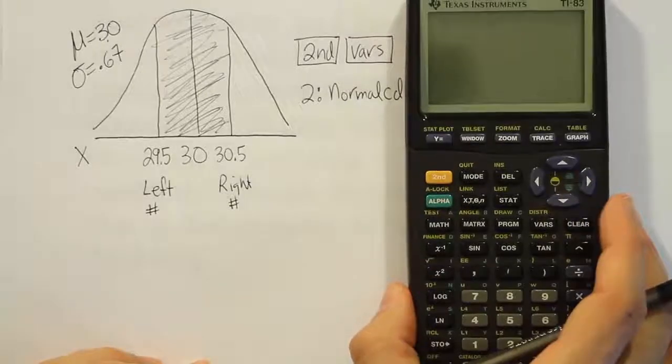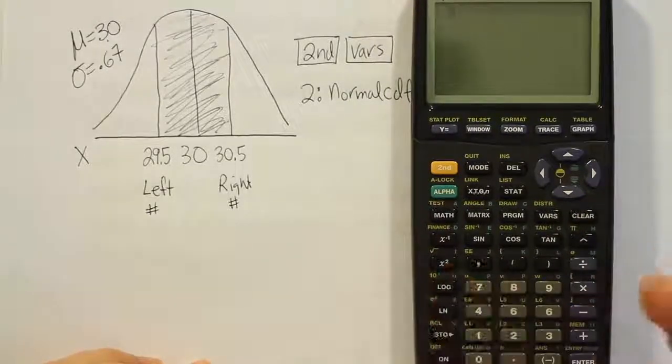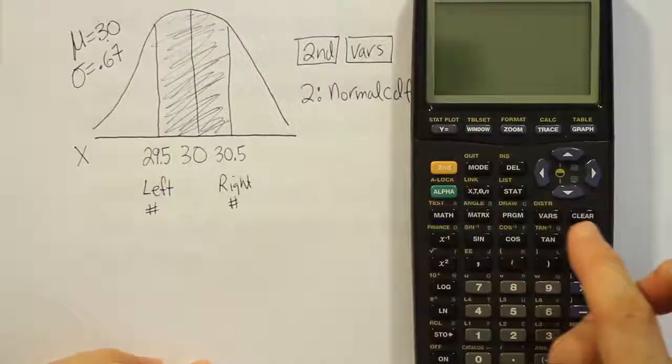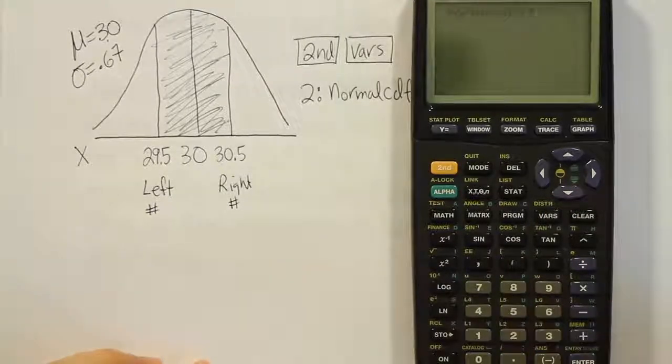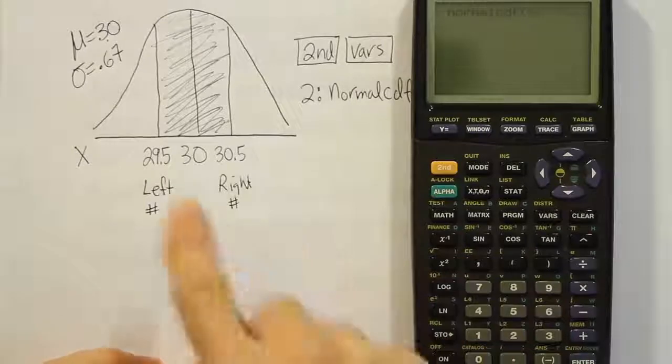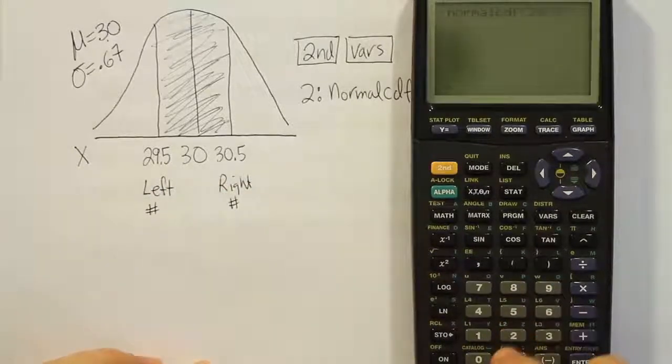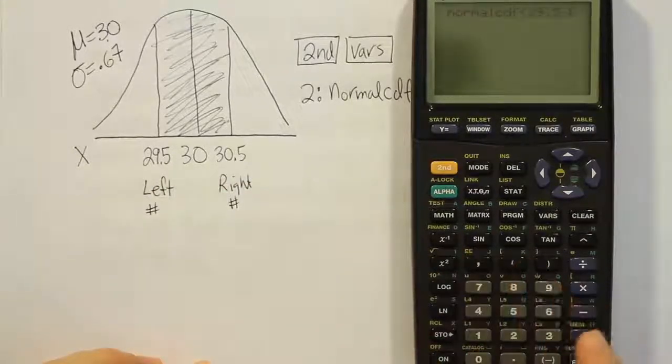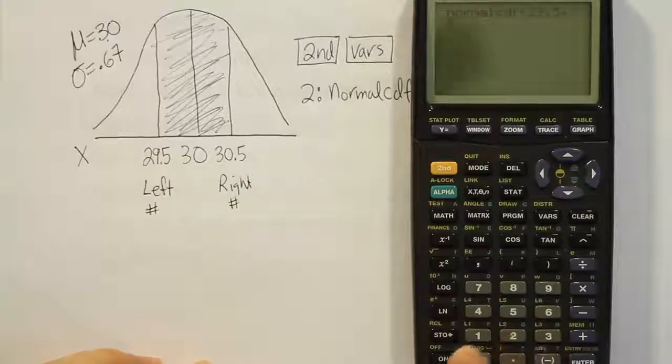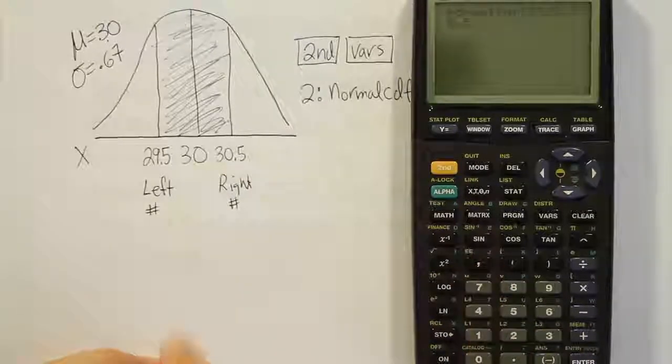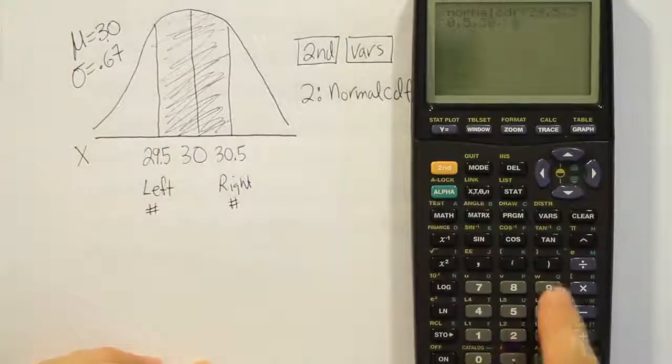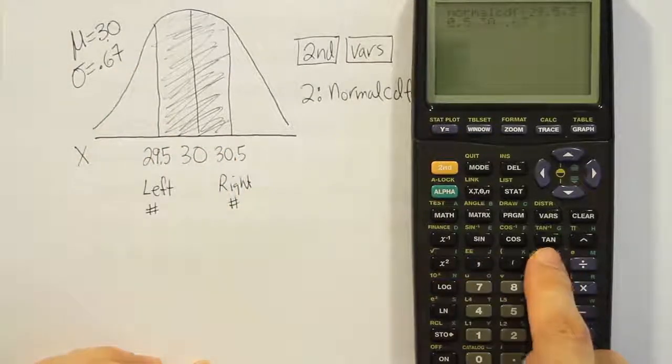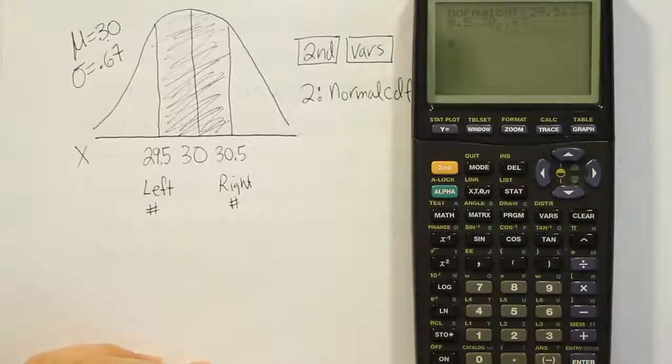Let's do that together with our calculators. We're going to press 2nd VARS, take option number 2 which is normalcdf. Then I'm going to enter the left number 29.5, comma the right number 30.5, comma the mean which is 30, comma the standard deviation which is 0.67. Close up the parenthesis, hit enter.